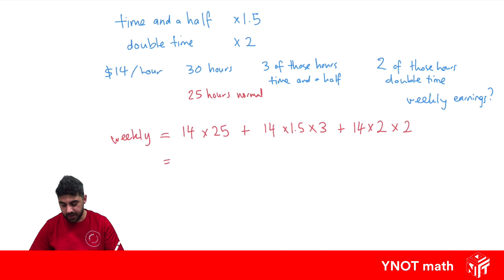And we just have to add all this up together, so it's going to give us 350 plus 63 plus 56, which is going to be a total of $469 for the week.